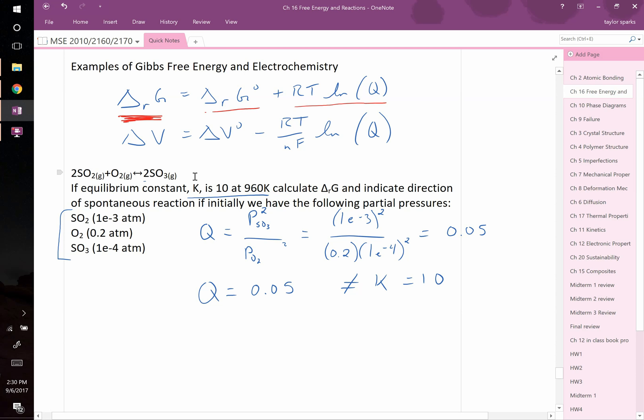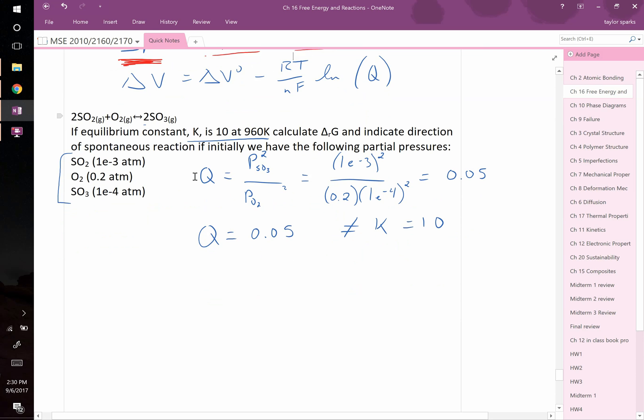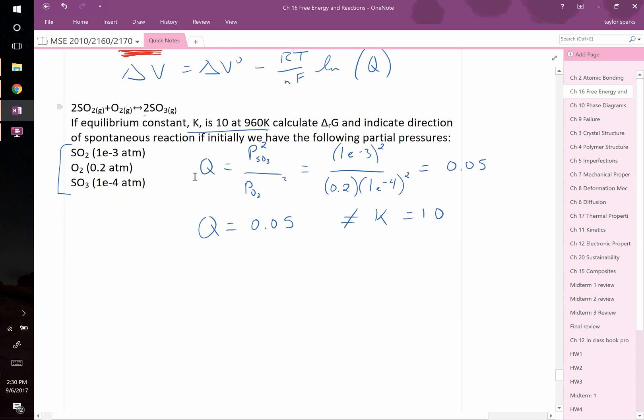We need to take advantage of the additional information given in the problem, which is that the equilibrium constant at this temperature is 10. Well, at equilibrium, we can modify our expression as follows. We know, at equilibrium, delta RG must equal 0. If it's at equilibrium, then the rate of the reaction going forwards and backwards is equal to one another. Therefore, there is no net change in the free energy. It's just equal to 0. Therefore, that is then equal to delta RG0 plus RT natural log of k. We use k because we're at equilibrium. Or in other words, k is a special value for Q, which can only be used when it is at equilibrium.